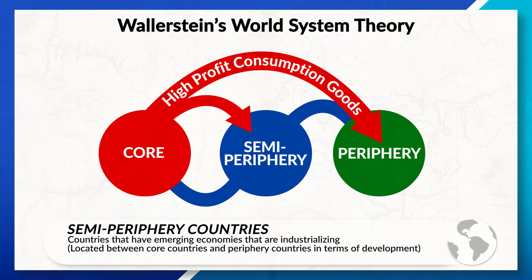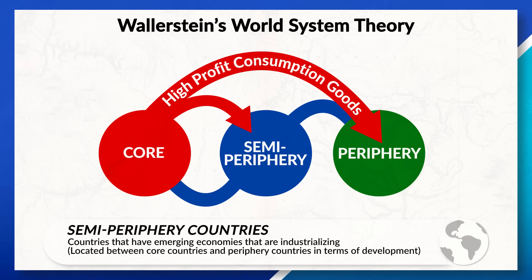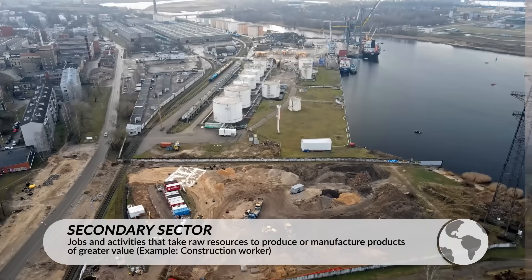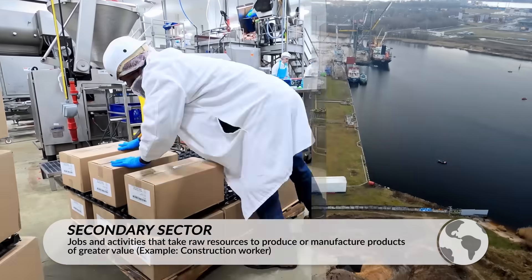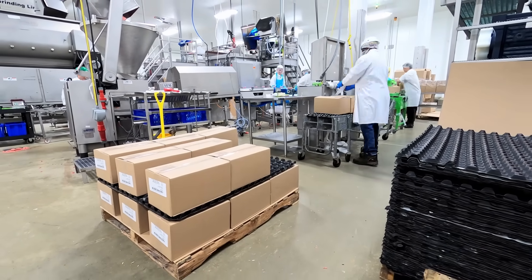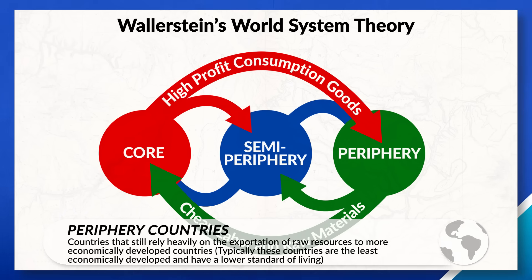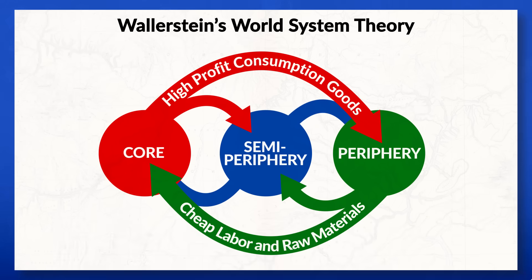Moving over to semi-periphery countries, we can see states that are in transition between the core and periphery. Semi-periphery countries are more industrialized than periphery countries and have more jobs located in the secondary sector. These countries also have established infrastructure for the exportation of goods, cheaper labor, and less regulations on the production of different goods and services, all of which leads to more exportation of goods to core countries. Lastly, periphery countries sit at the bottom of this global trade. These countries will often see their economy become dependent on just a few core countries, which often leads to the exploitation of cheap labor and raw resources. It's difficult for these countries to advance economically since so many of their resources are being exported to core countries instead of benefiting the local economy — which connects back to the dependency theory discussed earlier.